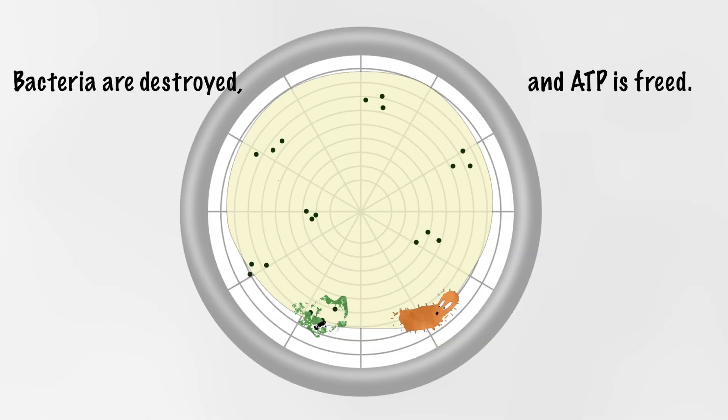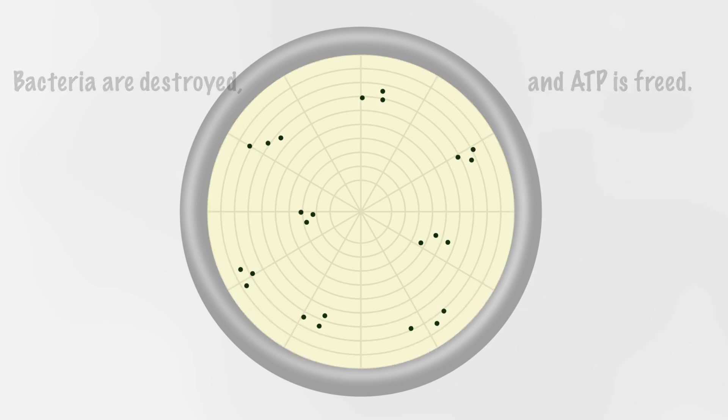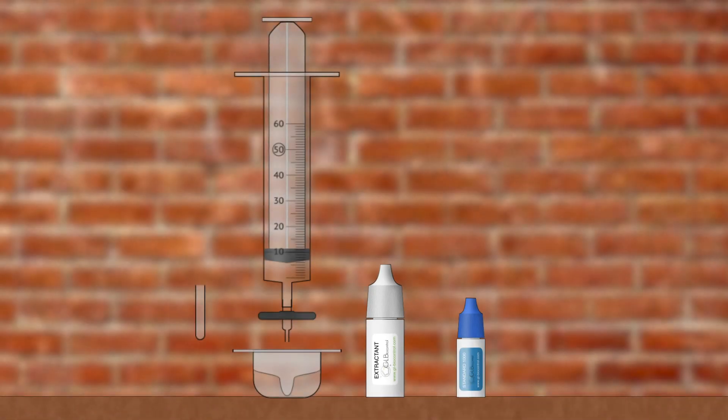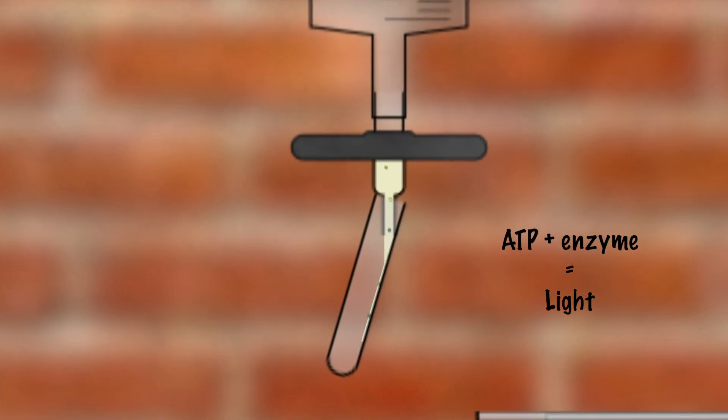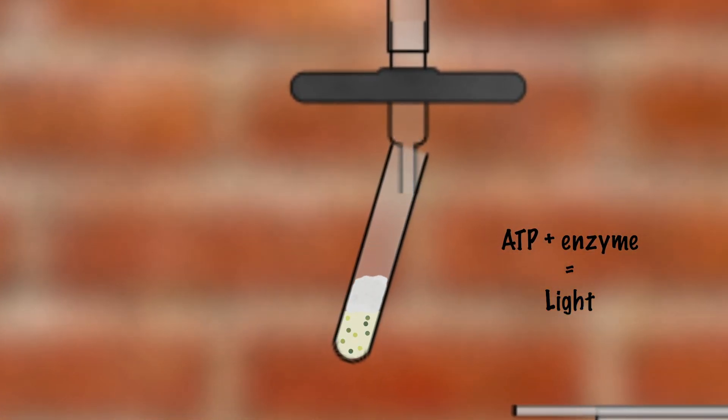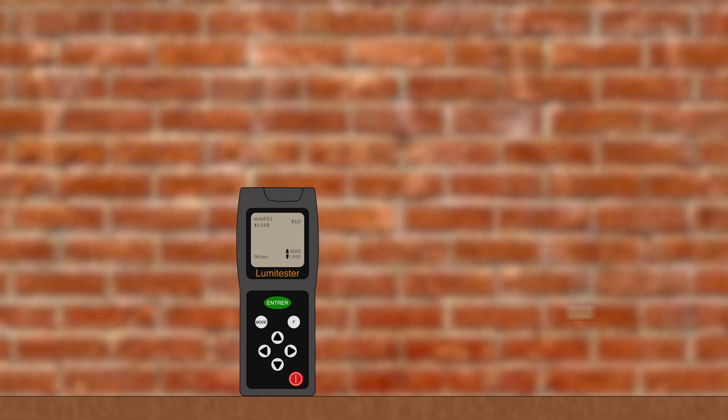This molecule is present in all living organisms. The reagent is then transferred into the Lumi tube. The ATP reacts with the enzyme and produces light. We measure the quantity of ATP using the luminometer. The result is obtained in just 10 seconds.